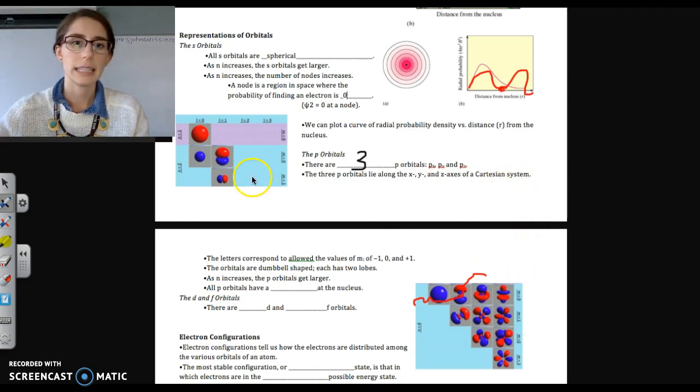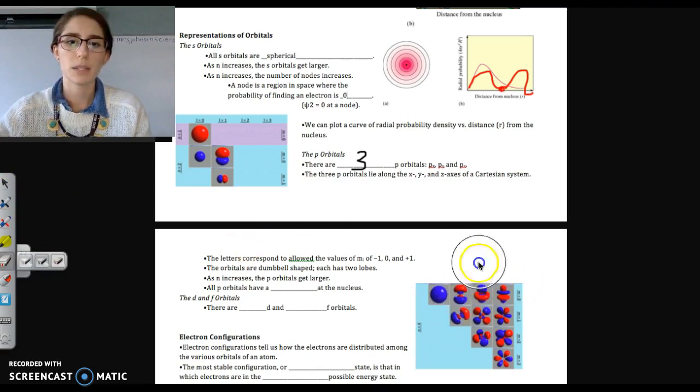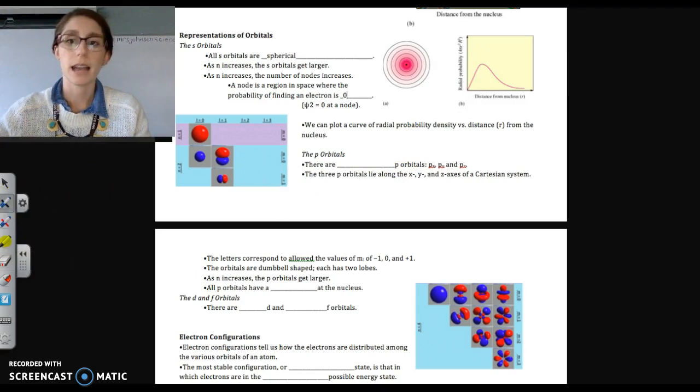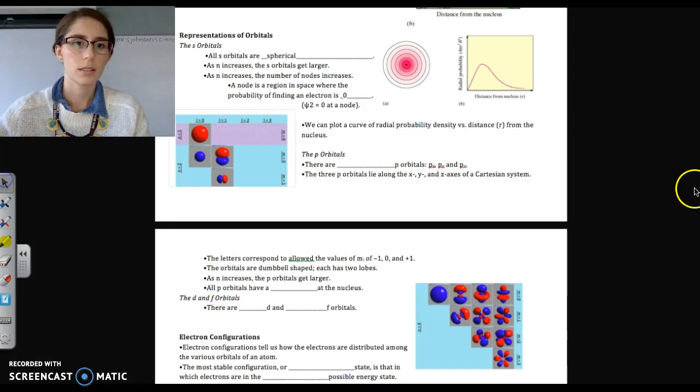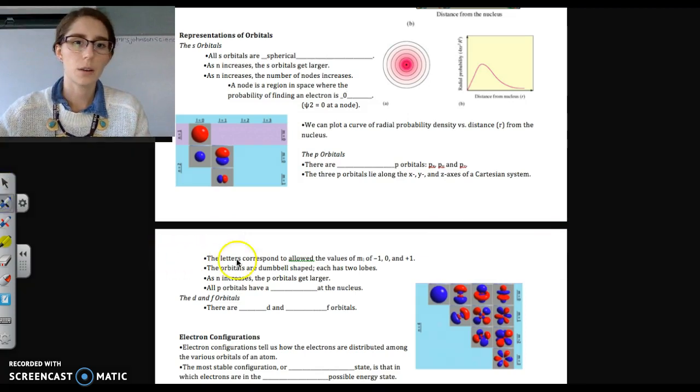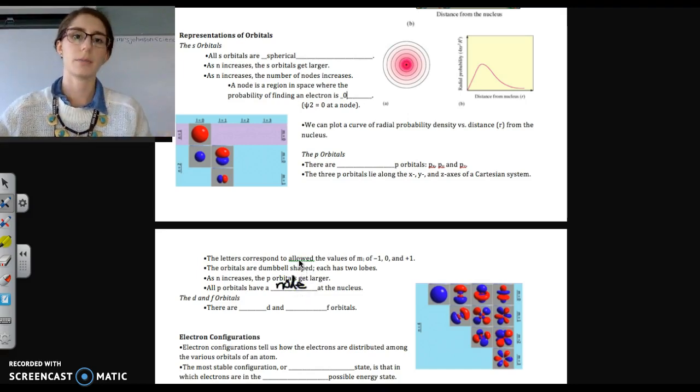Their shapes, though, are slightly different. So p orbitals are sort of like dumbbell shaped. And they're oriented around the axes differently. Let's see. What else do I want to say? All p orbitals down here have a node at the nucleus. And what we see is that as the energy levels increase, the number of nodes that we start seeing in our orbitals also starts to increase.